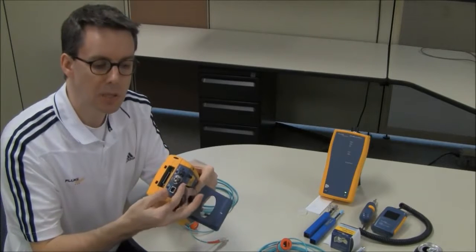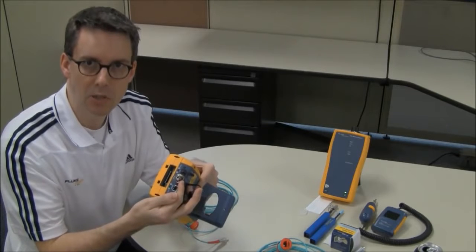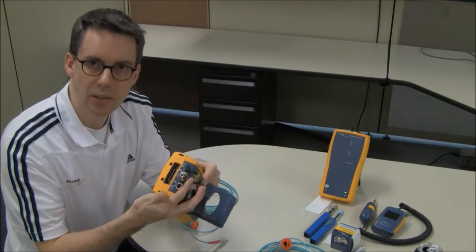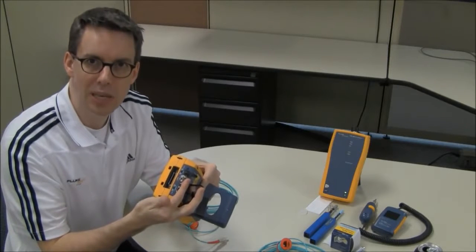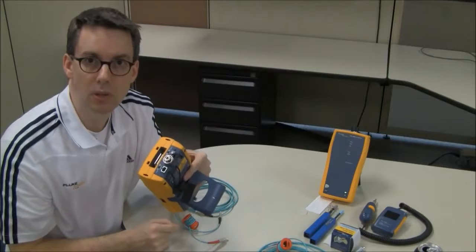These are the Series 2 because they have interchangeable adapters on them. That's what's going to allow me to do a OneJumper reference. I've already changed the standard connector that comes with this, which is SC, to LC, and I've done that on the remote unit already.